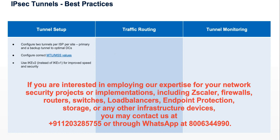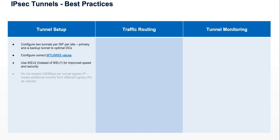Make sure you have the right MTU and MSS values. Internet Key Exchange version 2 negotiates quicker and has greater speed and security. With IPSec, we want to make sure we don't exceed 200 megabits per second per egress interface. Make sure that you add additional egress interface IPs and additional tunnels as needed.